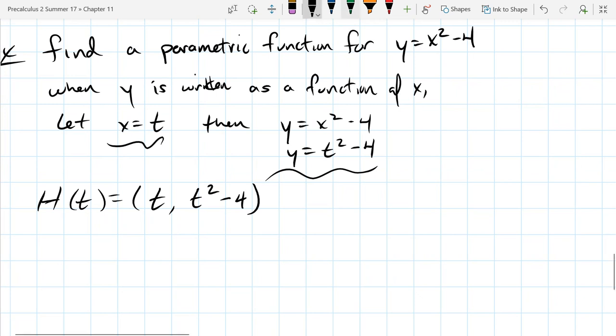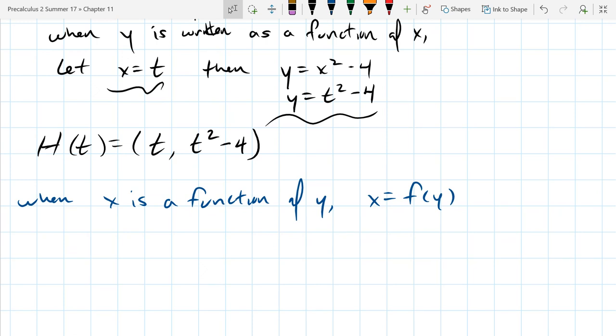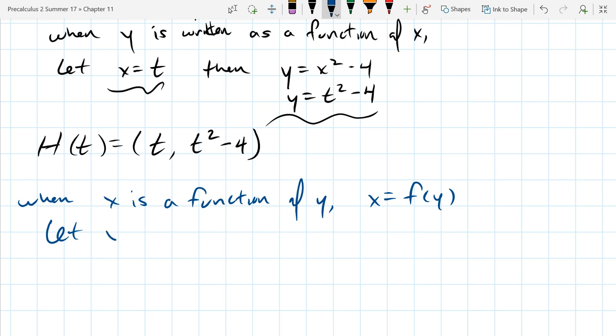If conversely, x is a function of y, so what does that mean? x equals some f of y. So what did we do last time? We let, so last time we let x equal t, this time we're going to let y equal t. Then what is x? x is, well normally x is f of y, all I'm going to do is take out y and replace it with t.